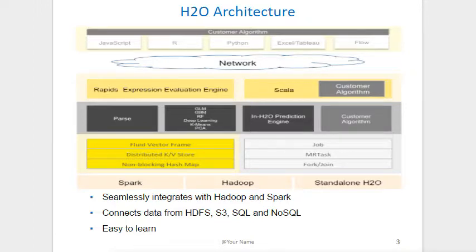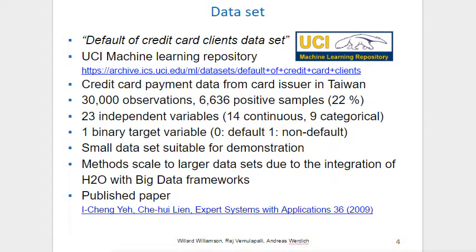Most importantly, it is very easy to learn. We used a dataset from the UCI machine learning repository. The dataset has 30,000 observations with 23 independent and one binary target variable. This is a comparatively small dataset, yet it is suitable for demonstration. Our methods, however, scale easily to larger datasets due to the integration of H2O with big data frameworks.